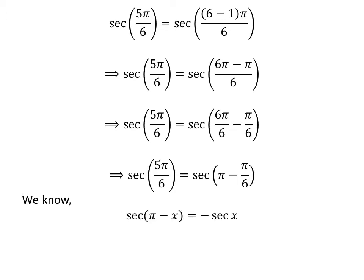We know the famous trigonometry identity: secant of pi minus x is equal to minus secant of x. The proof of the identity has been explained in the video appearing in the upper right corner of this video. The link of the video is also given in the description section. Application of the above identity gives us secant of 5 times pi upon 6 is equal to minus secant of pi upon 6.